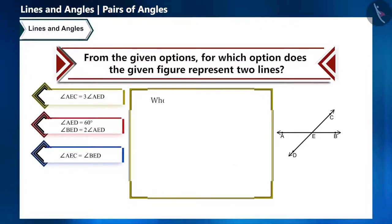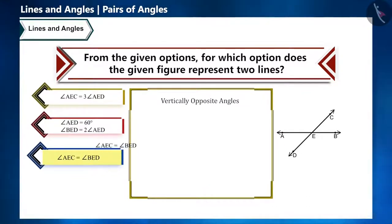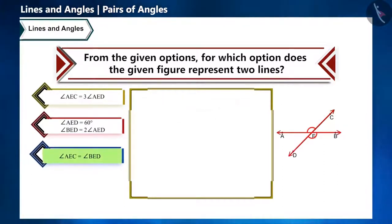Here, when can AE and CD be lines? When the opposite angles will be vertically opposite angles. And from the given options which option depicts the vertically opposite angles? It is the third option which straight away states that opposite angles AEC and BED are vertically opposite angles.